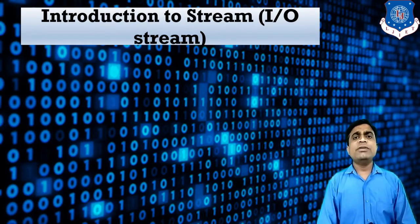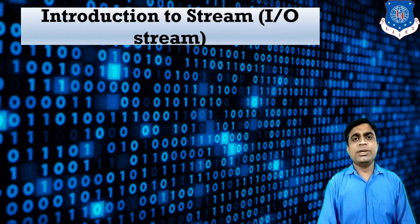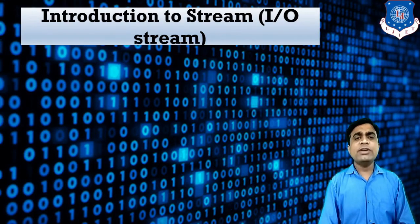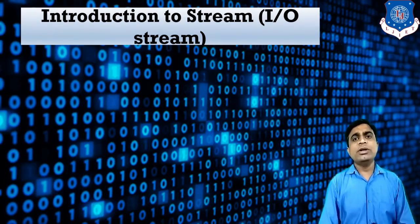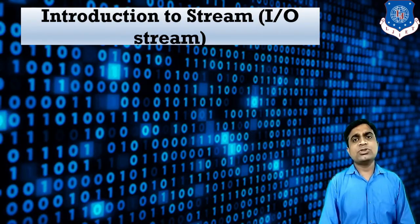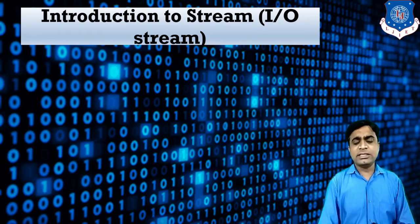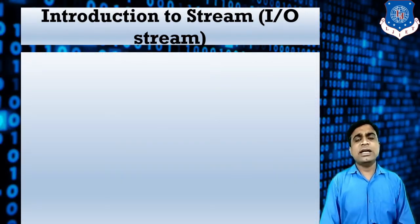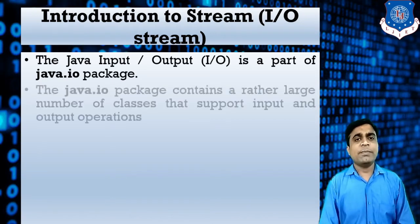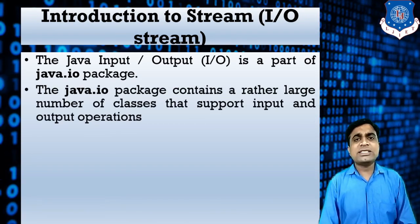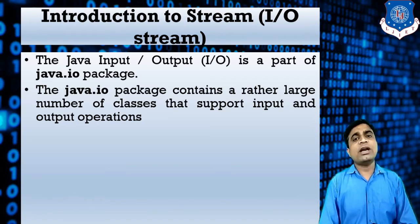First of all, we need to understand where we can use a stream and how to use a stream. Whenever you want to perform a program for file input-output, we require a stream. For stream-type programs, we require one important package: the java.io package. The java.io package contains a rather large number of classes that support input and output operations.